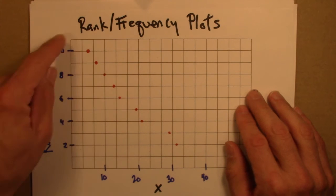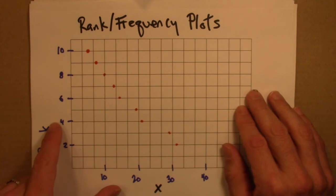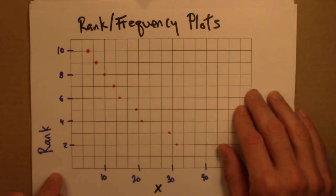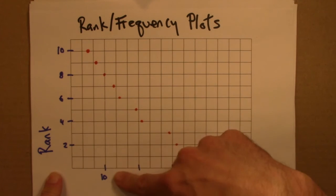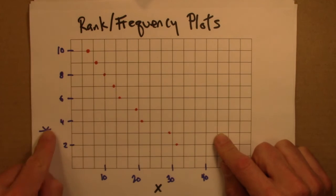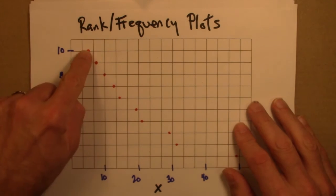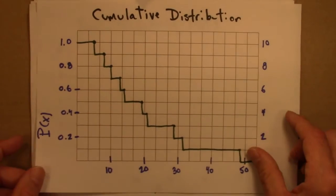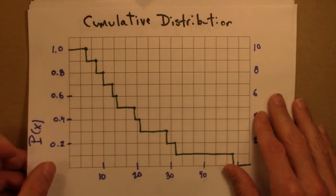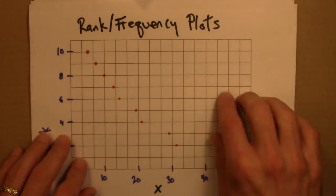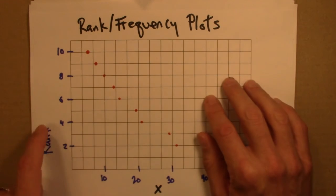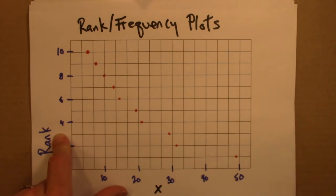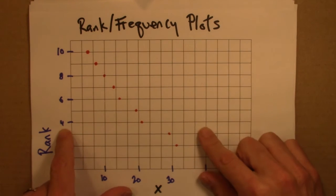Second remark is, it's common for the axes here to be inverted. That you could plot the rank down here and then the data value up here. I prefer to do it this way because it connects more naturally with the idea of a cumulative distribution. But you should be aware that often these will be flipped around.